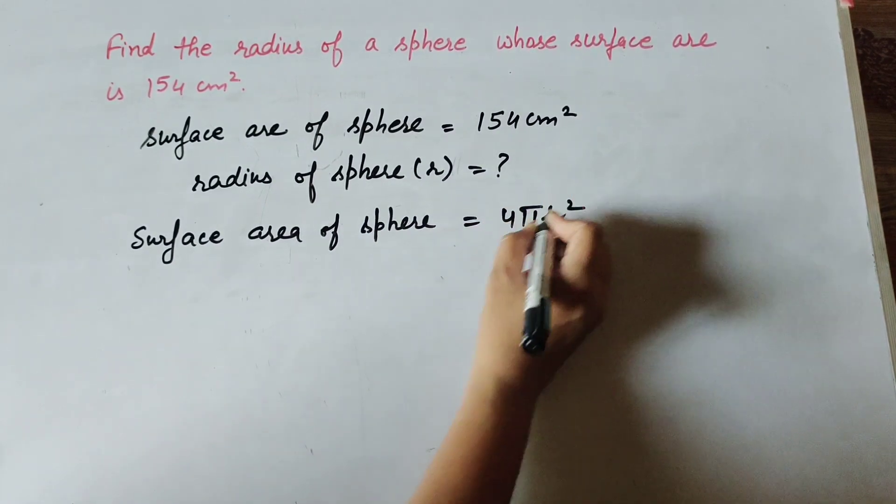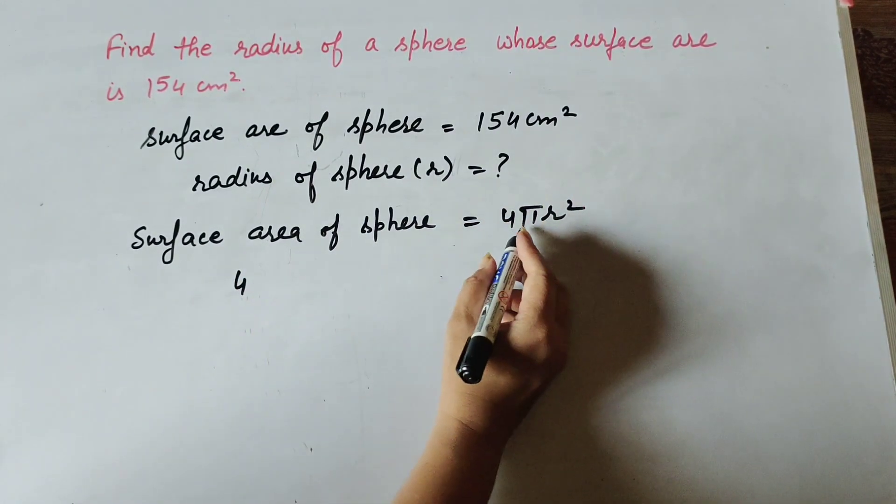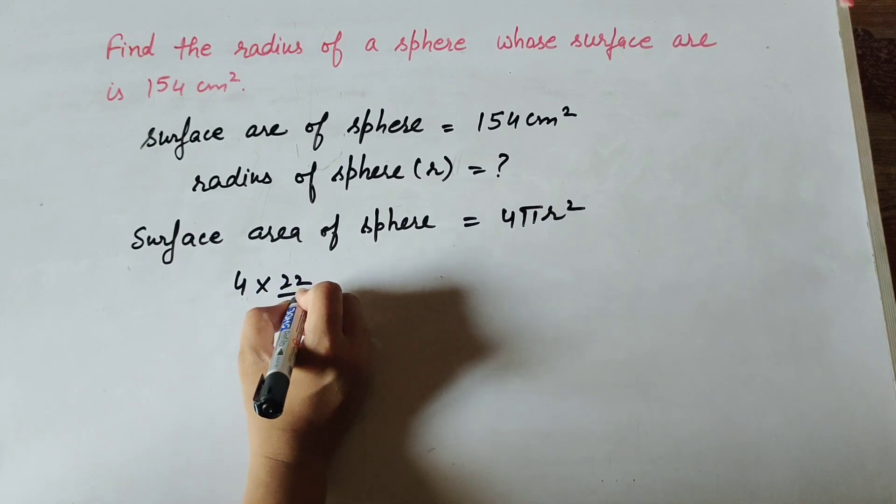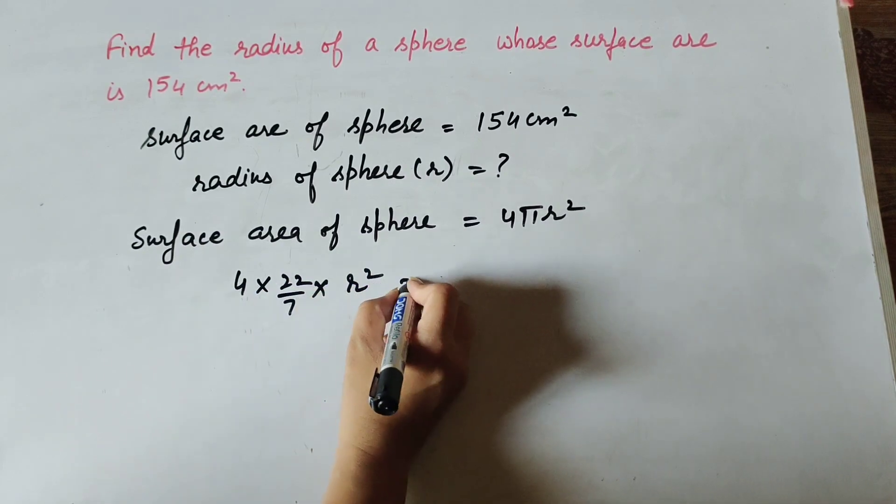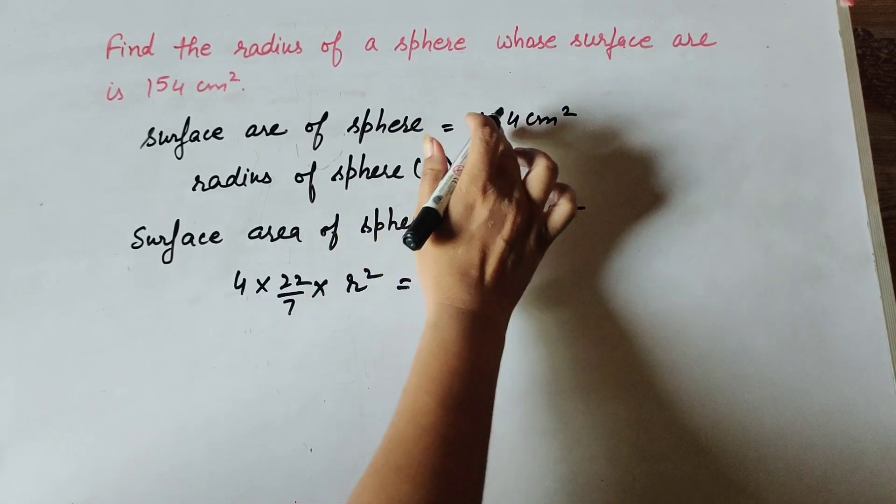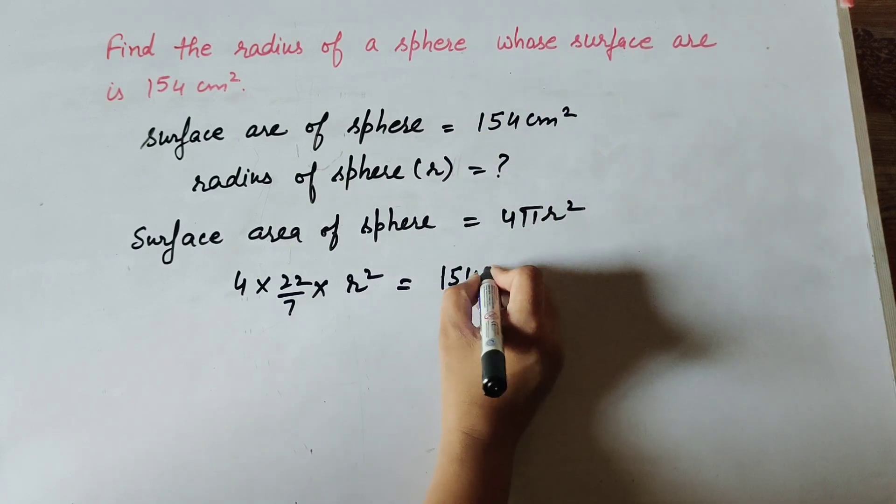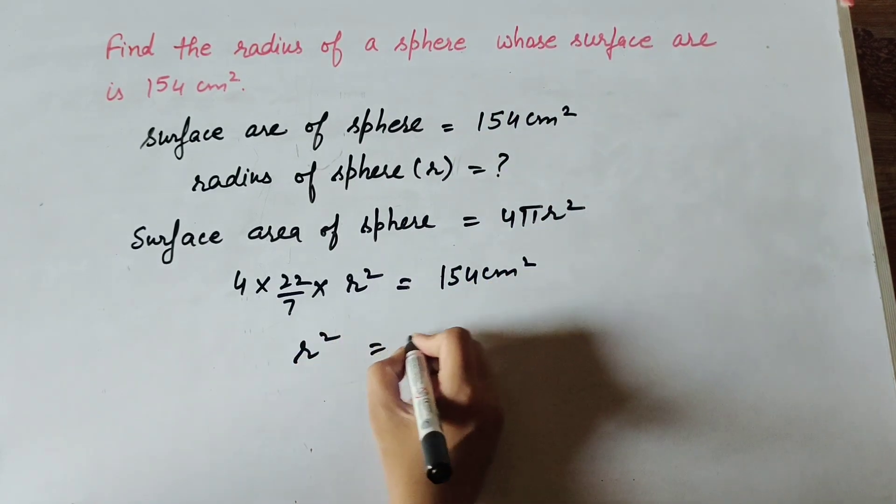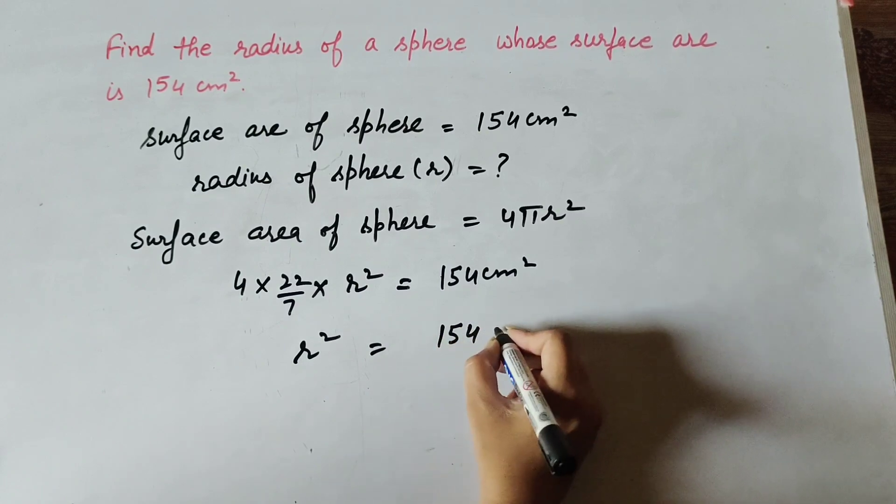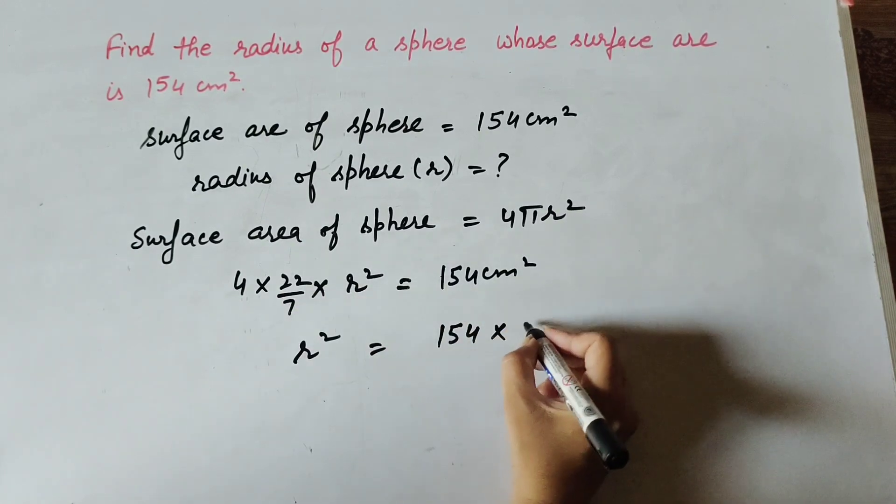4πr². 4π, its value is 22/7, times r² equals surface area of sphere, which is 154 centimeters square. So r² equals 154 multiplied by 7/22